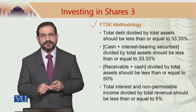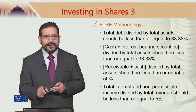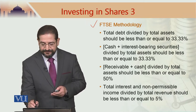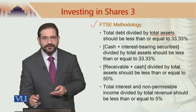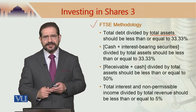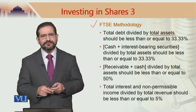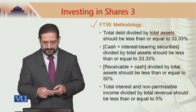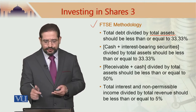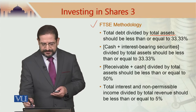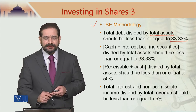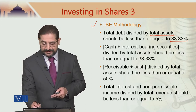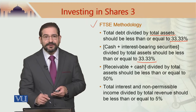Let us come to FTSE methodology. Total debt divided by total assets — this is again a methodology which is total-assets denominated. It wasn't the case in the beginning; FTSE methodology was market-cap denominated as well, but later on they changed. Total debt divided by total assets should not exceed 33.33%.